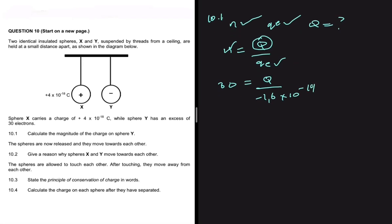Now it's just a matter of cross-multiplication. So we're going to get Q being equal to 30 multiplied by minus 1.6 times 10 to the minus 19. So the charge on sphere Y is equal to minus 4.8 times 10 to the minus 18 coulombs.